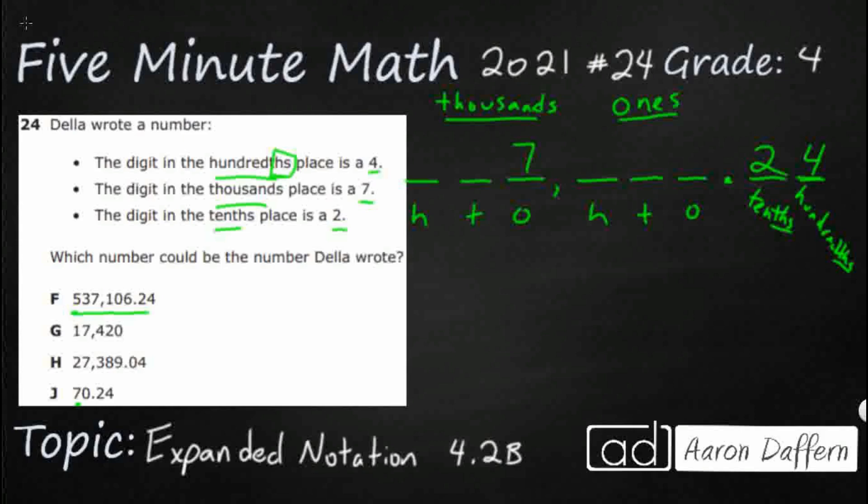So let's just start building them one at a time underneath. I've got 537,106 and 24 hundredths. And take a look right there. We've got a 7 in the thousands spot, we've got a 2 in the tenths, we've got a 4 in the hundredths. So we could have our correct answer right away. Let's double check.